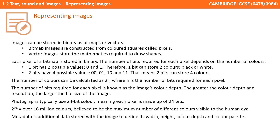So let's just recap. Images can be stored in binary as bitmaps or vectors. Bitmap pictures are constructed from coloured squares called pixels. Vector pictures store the mathematics to draw colour shapes. Each pixel of a bitmap is stored in binary. The number of bits required for each pixel depends on the number of colours required. One bit has two possible values, 0 and 1, therefore one bit can store just two colours, e.g. black or white.